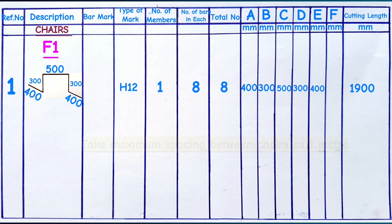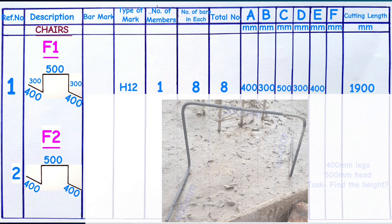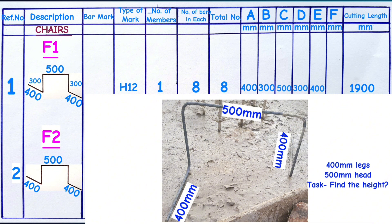Another example is footing F2. This side is 400 millimeters and the other side is also 400 millimeters. I choose 400 millimeters because from personal field experience, it provides stability for the chair and is relatively proportional to the 500 millimeter head. With 400mm on each leg and 500mm on top, the task is to find out the height.